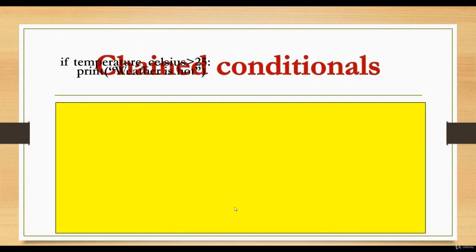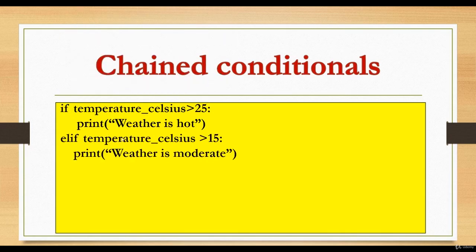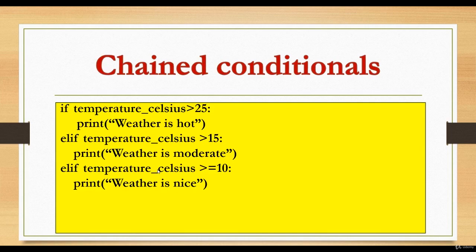Chained conditional: when there are more than one condition to be tested, a chained condition should be used. For example: if temperature in Celsius is greater than 25, print 'it is hot'; else if temperature is greater than 15, print 'it is moderate'; else if temperature is greater than 10, print 'it is nice'; else, if all conditions are false, print 'it is cold'.